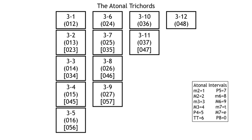That is, if we were to take any three unique pitches, group them together into what we call a set, then it would be one of these 12 sets, one of these 12 trichords. It's handy to memorize it, and one of the things you can do to memorize it a little bit more easily is to memorize the organization of this chart. I'm going to talk about atonal sets and trichords and atonal music theory in a different video, but for now this should be enough to get you started.